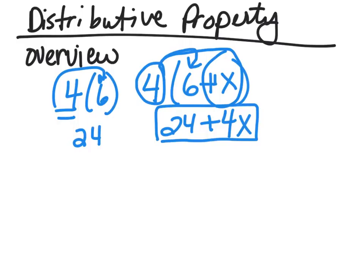So until you have just numbers, you can do something different. Let's do a different color. If I have 3 times 7 minus 5, and they want you to distribute.